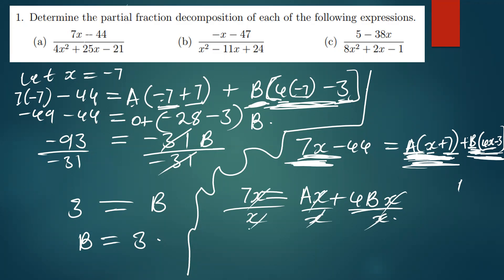So remember we found b to be 3, so we just replace 3 there. So we're going to have 7 is equal to a plus 4 times 3. So we're going to have 7 is equal to a, then 4 times 3 is giving us 12. So we have 12 there.